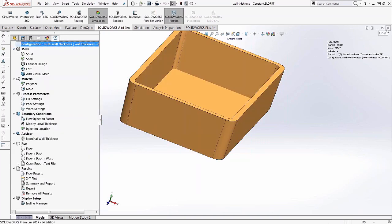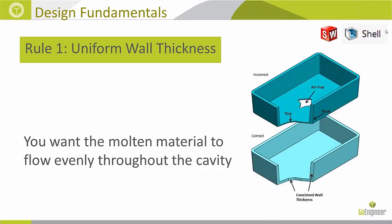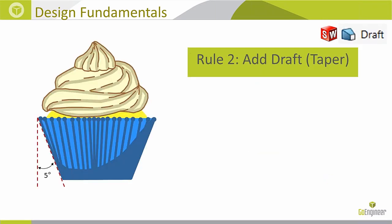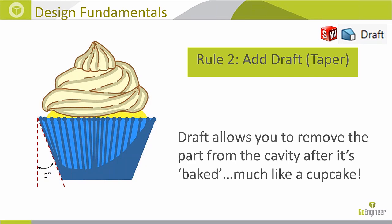Rule number two is adding draft or taper. A cupcake is a great analogy — the sidewalls are drafted so that once the cupcake cools, you can easily remove it from the mold. Draft doesn't affect the part itself, but it does affect cycle time. Many tool makers specify a minimum of three degrees, though this varies.